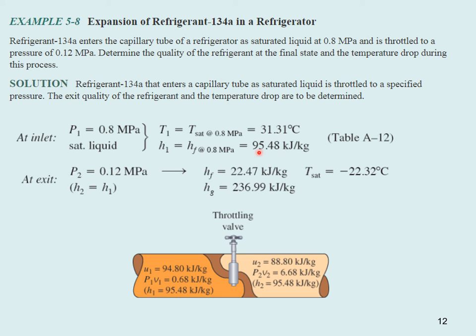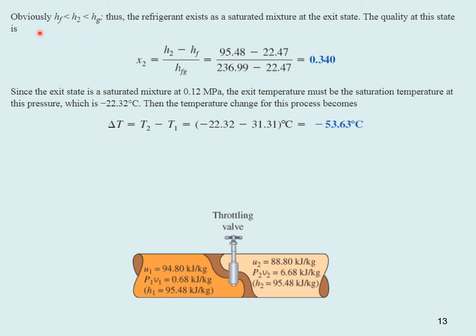We can look this value up. We have to look up the HF value and the HG value. We can find that the saturation temperature is minus 22.32 degrees C. These all come from the tables. H2 falls between HF and HG, so the refrigerant exits as a saturated liquid vapor mixture. We can calculate the quality using our standard formula: 0.340. Since it's a saturated mixture, we can calculate the temperature difference: minus 53.63 degrees C.